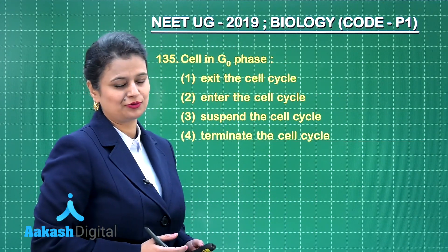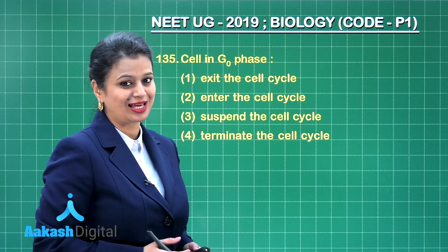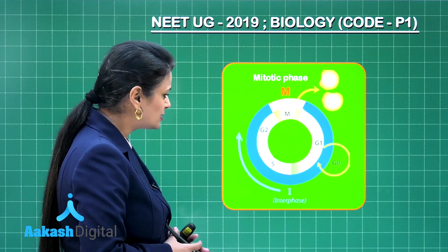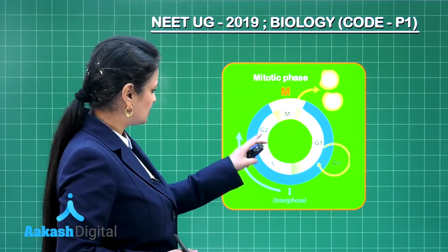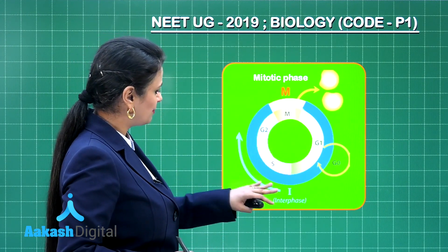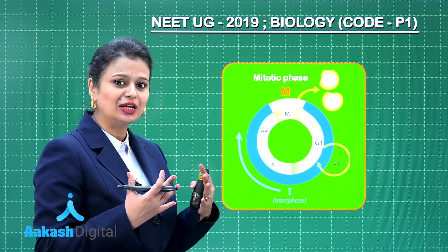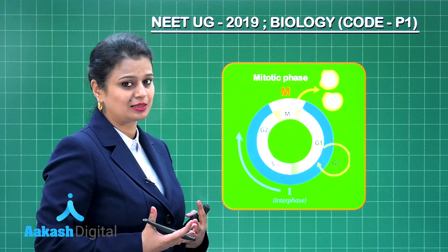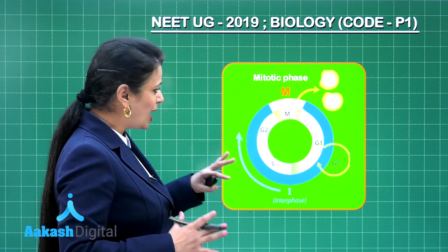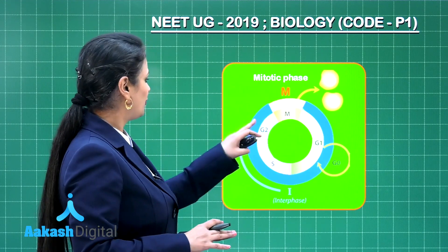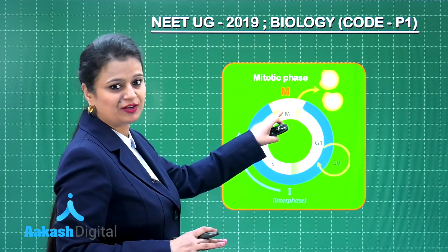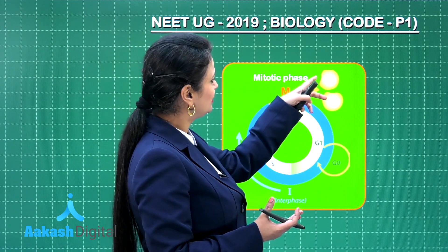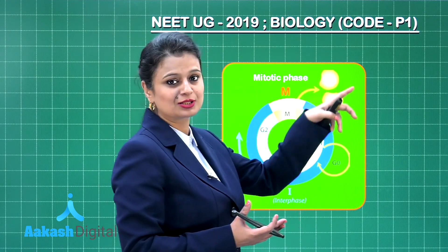Next question: cells in G0 phase. This question is associated with the cell cycle. In the cell cycle there are different phases — G1, S, and G2 — which are all part of interphase, a preparatory phase where the cell prepares itself for cell division. Once preparation is complete, the cell enters M phase where it divides.